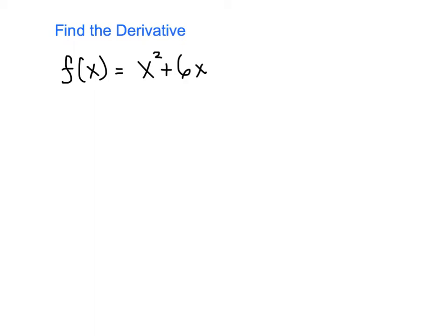Okay, so for step one, we're going to find f of x plus h. And what that means is we plug x plus h into the function wherever we see x. So we're going to have x plus h squared plus 6 times x plus h.